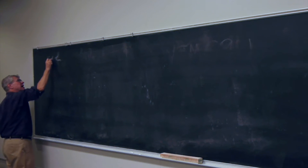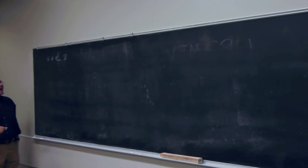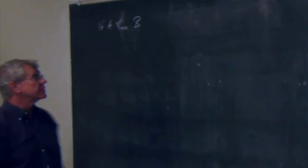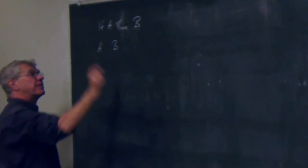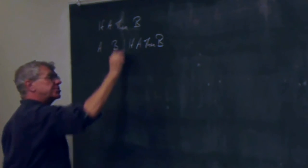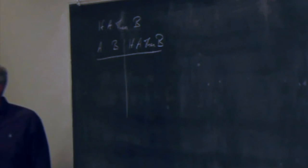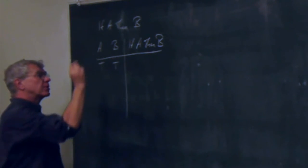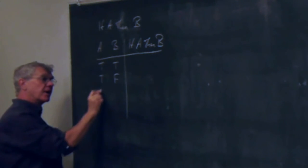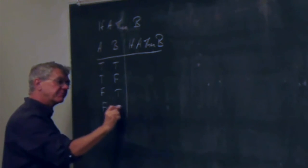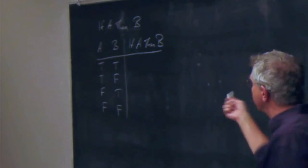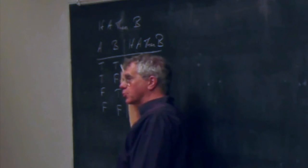If we want if-then to be an extensional context, it has to be a truth function. We should be able to specify the truth values of A and B and get a truth value for 'if A then B.' Suppose both A and B are true — we specify the truth value. A is true and B is false; A is false while B is true; and both might be false. To specify this as a truth function, we need a determinate truth value for each of those four combinations.